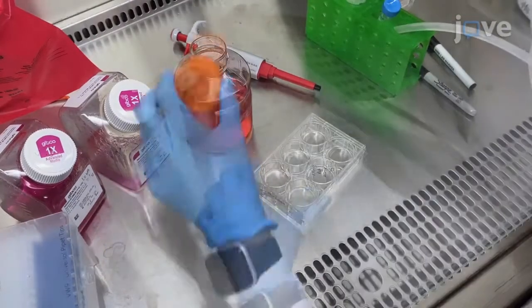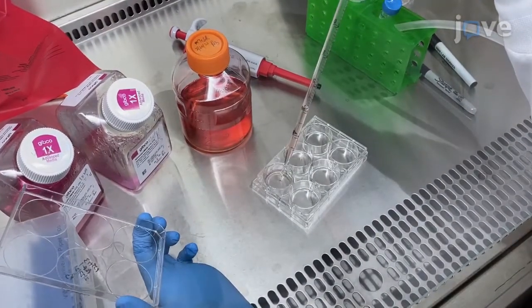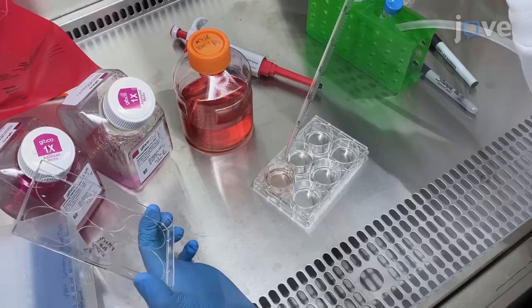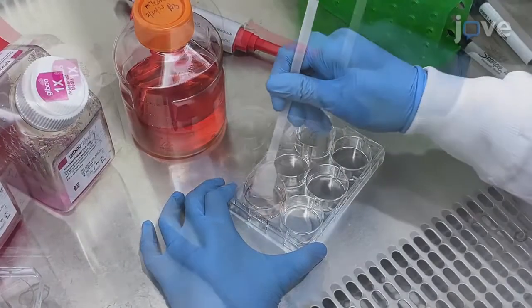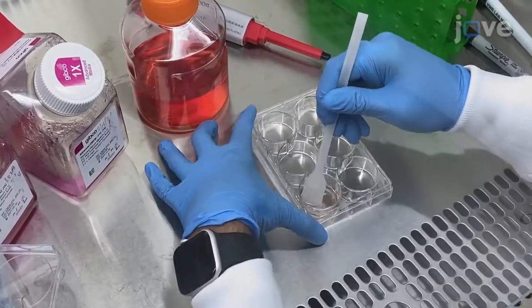Add 3 milliliters of human iPSC culture medium to the human induced pluripotent stem cells and use a cell lifter to scrape the colonies.